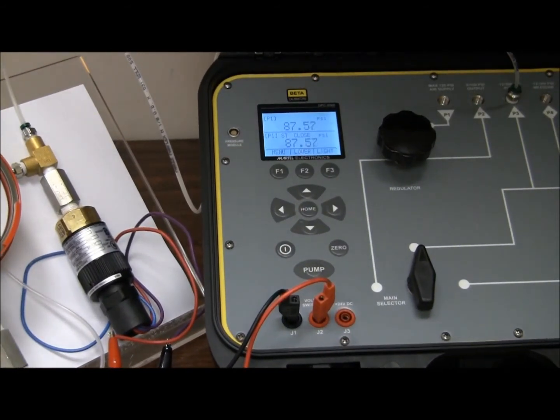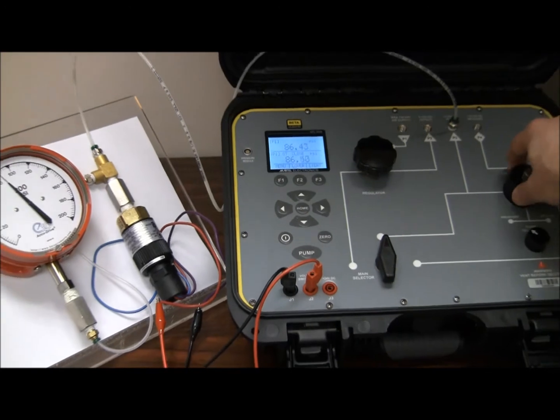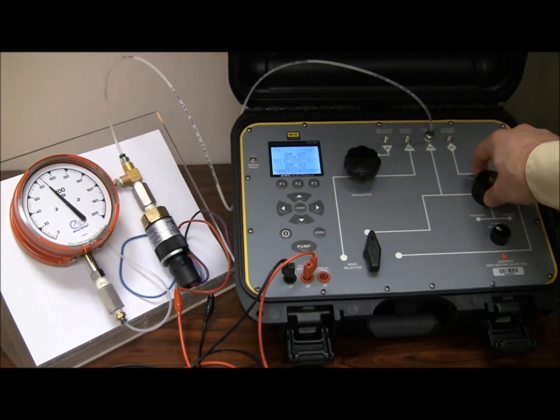I am going to use the DPC-300A to generate the pressure and capture the switch open, close, and deadband. I am now using the variator to dial in the switch point around 85 psi G.